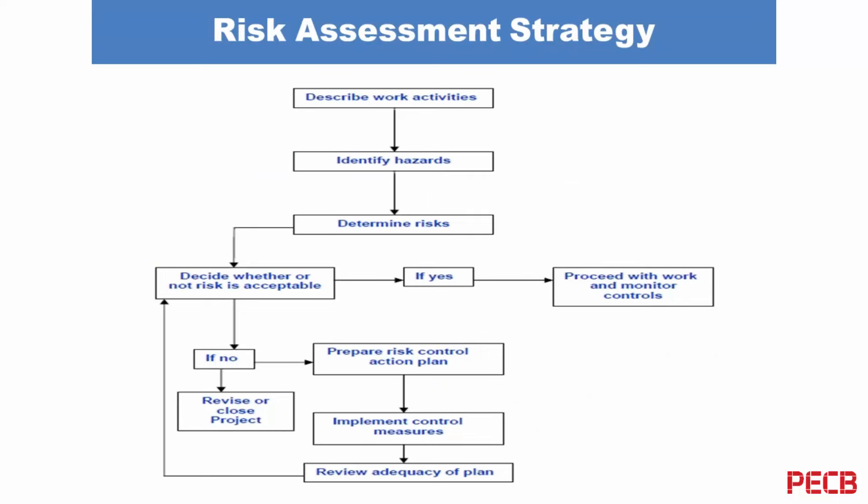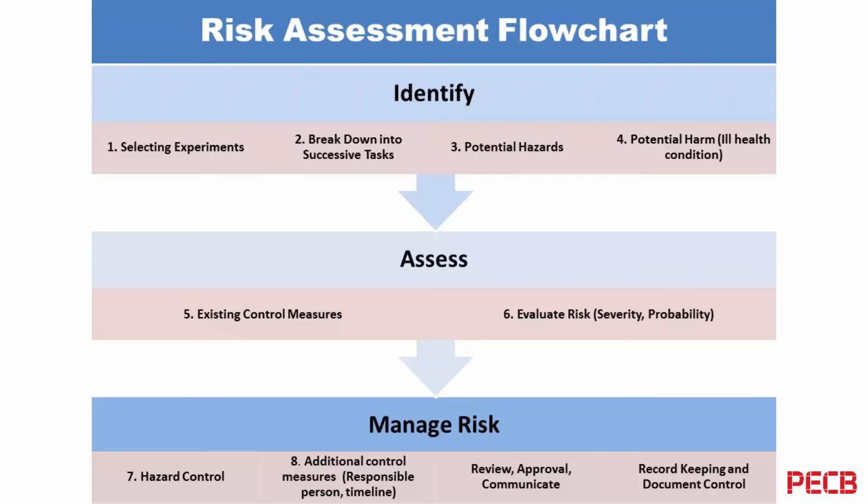The risk assessment strategy is a follow-up: decide whether or not the risk is acceptable. If not, you either revise or close the project, or alternatively prepare a risk control action plan, implement the control measures, and then review the adequacy of the plan. If the risk is still not acceptable, you repeat the cycle — it is a chain, a series of processes. A flowchart illustrates this: identify the risk, assess the risk, then manage the risk.